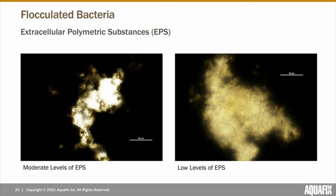Next, we'll analyze EPS levels to help determine the strength of flock. We use a black India ink stain. If there are higher levels of EPS present, more of the India ink is repelled, producing a brighter color flock under the microscope. If there are lower levels of EPS, it'll be less bright. Moderate levels of EPS are most ideal for flock formation, as problems occur if levels are too high — such as sliming — or too low, such as flock disintegration.